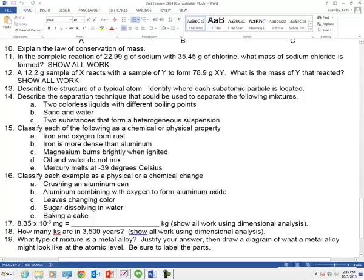Fifteen. Classify each of the following as a chemical or physical property. Chemical properties, they change the overall identity of the substance. Physical properties do not. Iron and oxygen form rust. The formation of rust is actually a chemical process because it makes something called iron oxide. Iron oxide is different than iron. It is a new compound. And since you're forming a totally different compound, that would be a chemical reaction. And so that, therefore, is a chemical property.